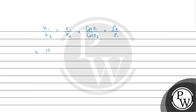Now substituting the values: the water rise is 10 cm and mercury is depressed by 3.42 cm, so a negative sign applies, giving minus 3.42. We get: 10 divided by minus 3.42 equals sigma1 over sigma2, multiplied by cos 0 degrees over cos 135 degrees, multiplied by the density of mercury (13.6 g per cm³) divided by the density of water (1 g per cm³).